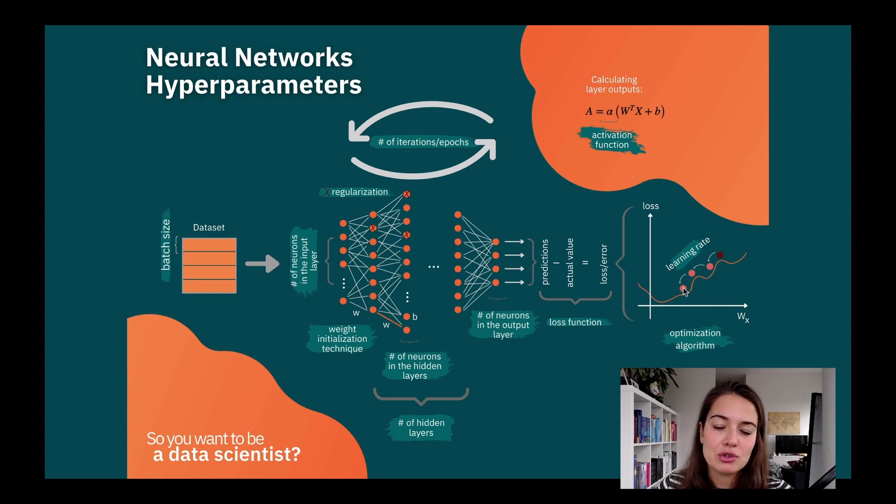Once this is done, backpropagation uses this information to update all the weights and biases, and we come back here. Then we do the same thing for the next batch: make some predictions, calculate the error, optimization algorithm calculates, backpropagation calculates how much each of the weights and biases affected the error, optimization algorithm decides which direction to go, learning rate tells us how far in that direction to go, and then we do it again.